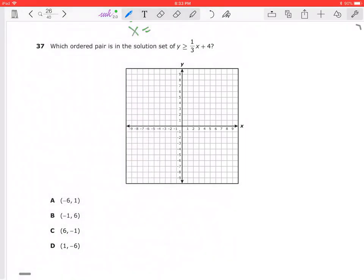Alright, so this is question number 37. It says y is greater than or equal to 1/3x plus 4. So I have my y-intercept is going to be at (0, 4).